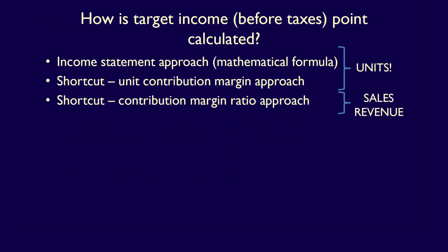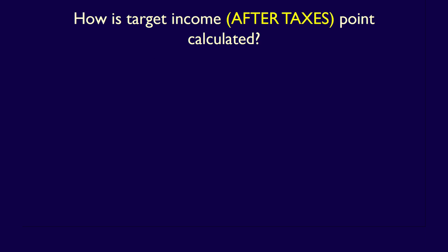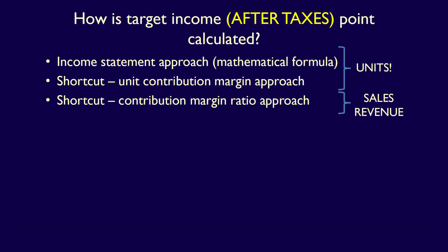We have now calculated the units and sales revenue needed to obtain a target operating income before taxes. The formulas used to break even are identical to the formulas used to earn a target operating income before taxes — the only change is replacing operating income of zero with a target operating income of $120,000. Now, how do we calculate the units and sales revenue required to earn a target operating income after taxes? We will use almost the exact same formulas with a small adjustment.